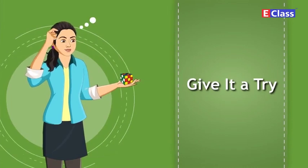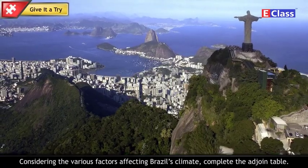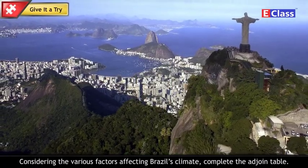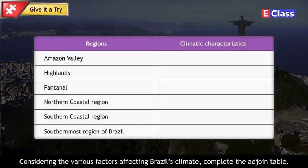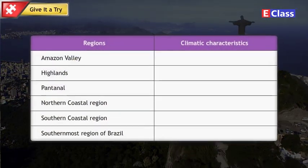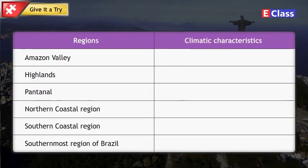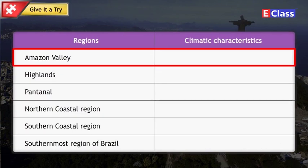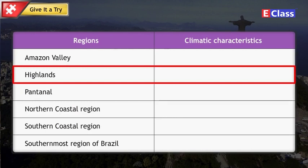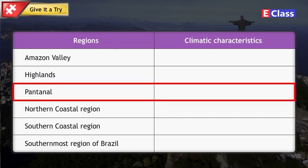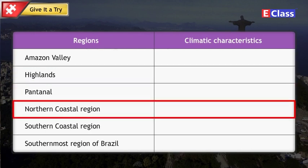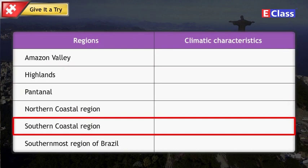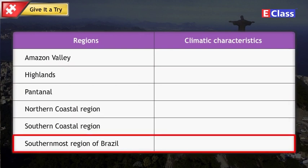Give it a try. Considering the various factors affecting Brazil's climate, complete the adjoined table listing the following regions and their climatic characteristics: Amazon Valley, Highlands, Pantanal, Northern Coastal Region, Southern Coastal Region, and the Southernmost Region of Brazil.